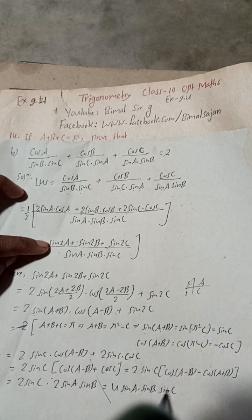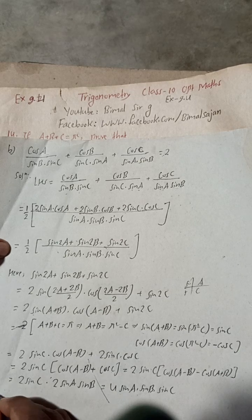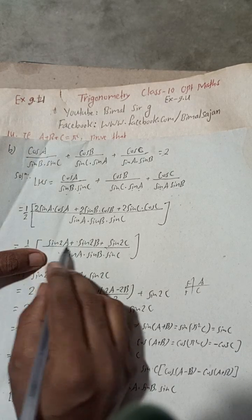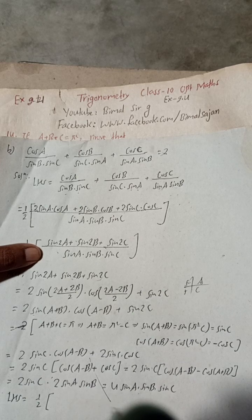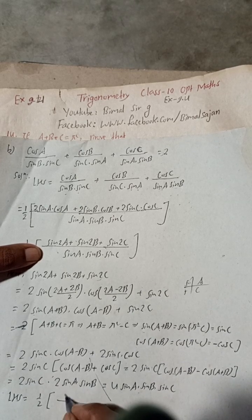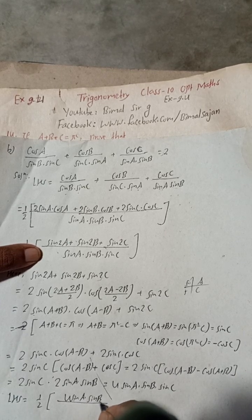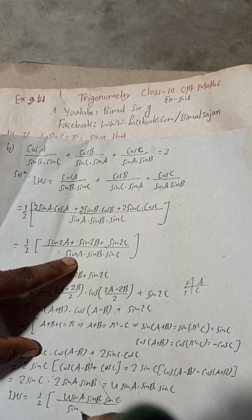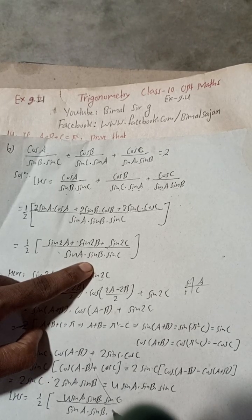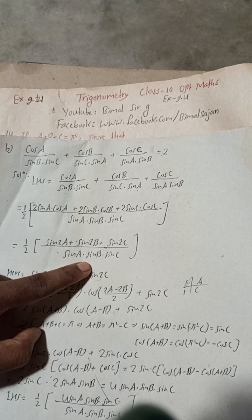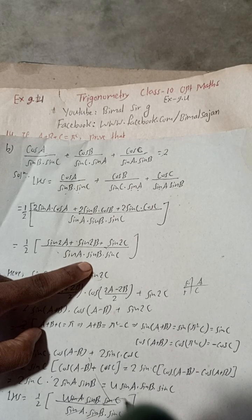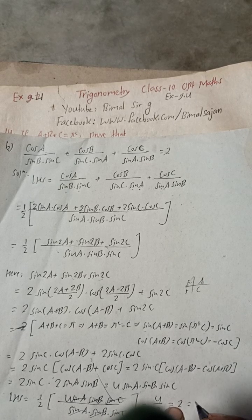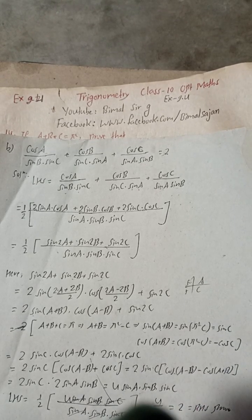Now we join this back. LHS equals one-half times [4 sin A sin B sin C] over (sin A · sin B · sin C). The sin A, sin B, and sin C cancel, and 4 divided by 2 equals 2. Wait — that gives RHS. Proved!